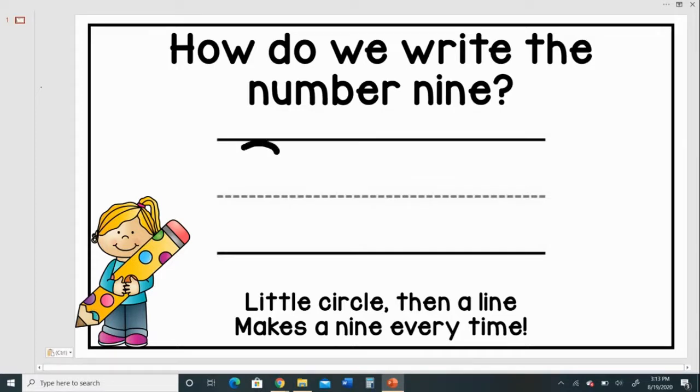Little circle. Then a line. Makes a 9 every time. Let's try it again. Little circle. Then a line. Makes a 9 every time. Let's see if you can say it.